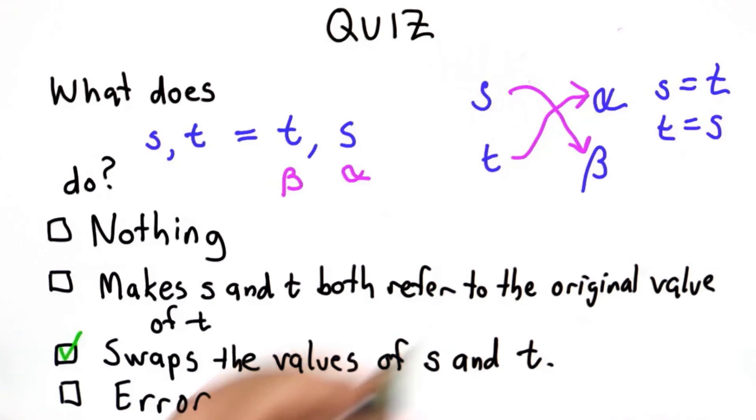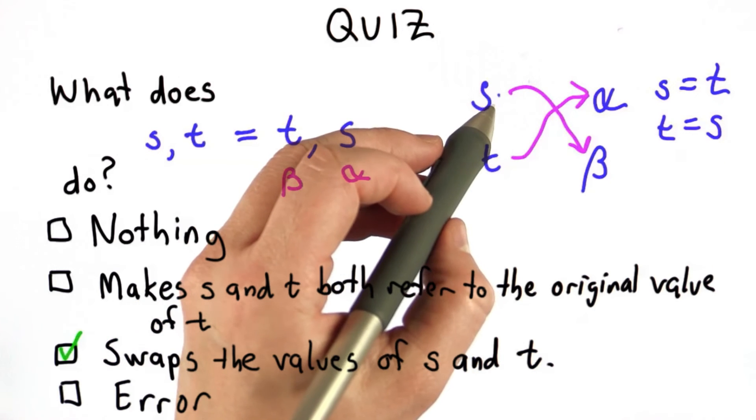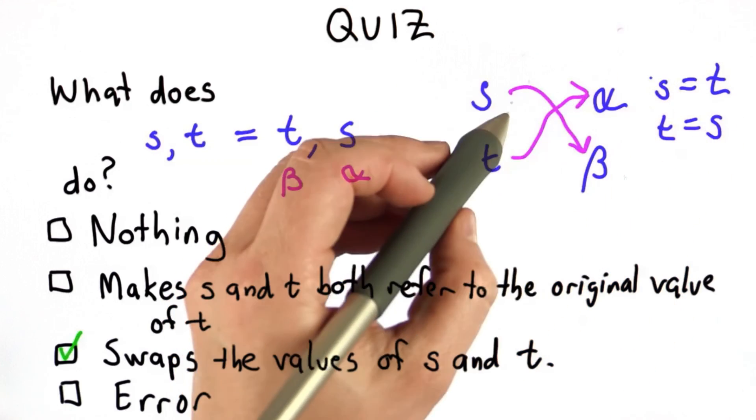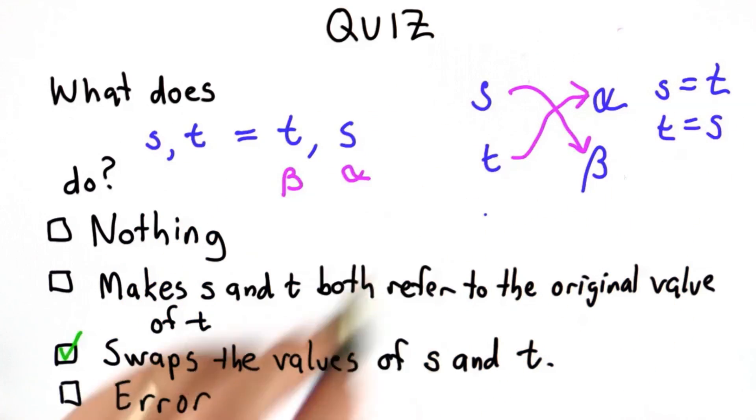that wouldn't swap the values because by the time we do the second assignment, the value of S has changed. Now it refers to whatever the value of T was. If we had done these two statements, both of them would end up having the value beta.